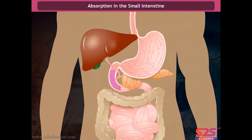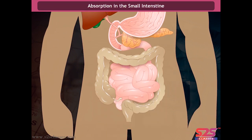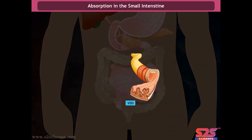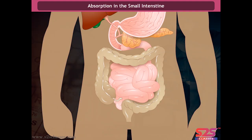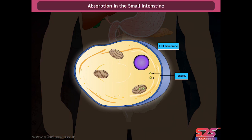The digested food passes into the blood vessels in the wall of the intestine — a process called absorption. The inner walls of the small intestine have thousands of finger-like outgrowths called villi, which increase the surface area for absorption. Each villus has a network of thin blood vessels close to its surface. The absorbed substances are transported via blood vessels to different organs of the body to build proteins. This utilization is called assimilation. In the cells, glucose breaks down with oxygen into carbon dioxide and water, releasing energy.